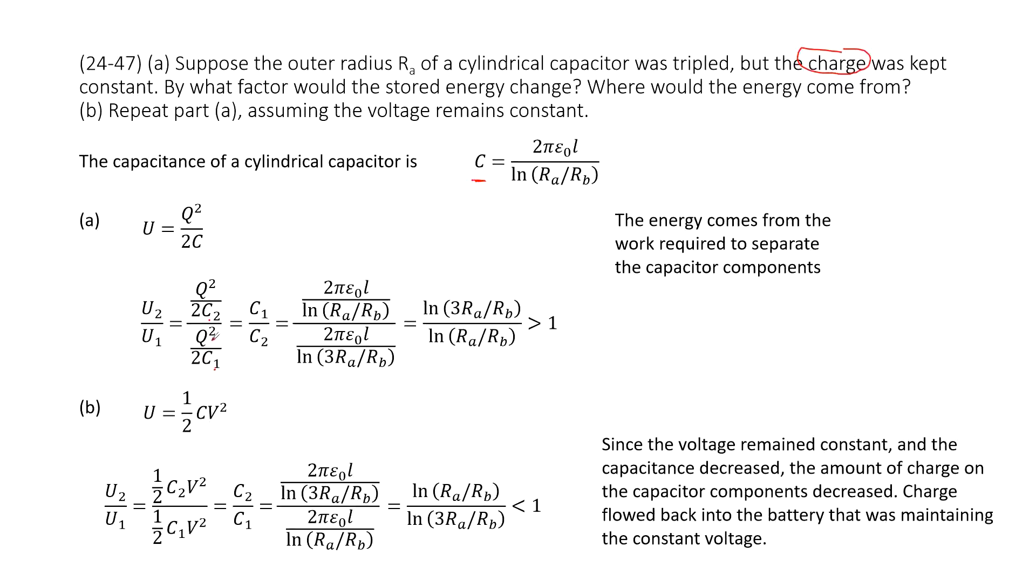You can see q squared, q squared and 2, 2 can be cancelled. So this term simplifies to c1 over c2. And then we input c1 and c2 inside.